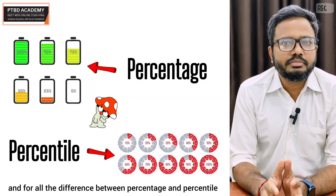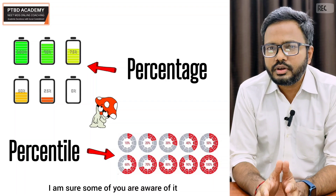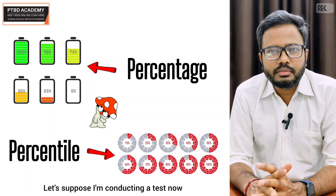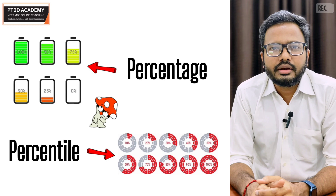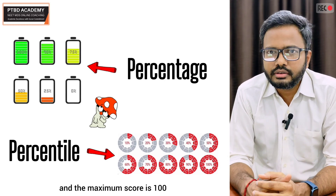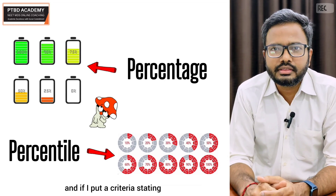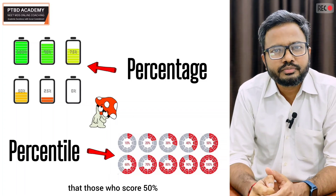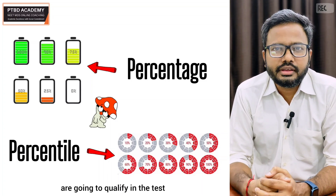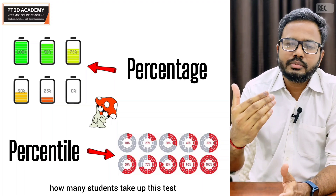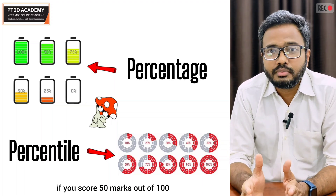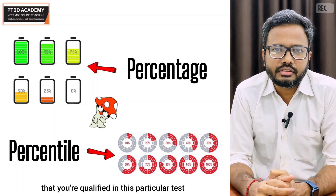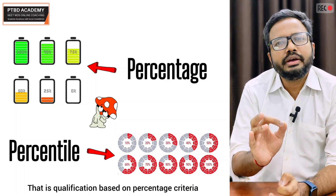I'm sure some of you are aware of the difference between percentage and percentile, but for those who aren't — in simple terms, let's suppose I'm conducting a test with a maximum score of 100, and I put a criteria stating those who score 50 percent are going to qualify. This means no matter how many students take the test, if you score 50 marks out of 100 you are qualified. That is qualification based on a percentage criteria.